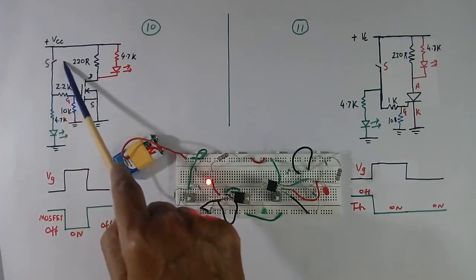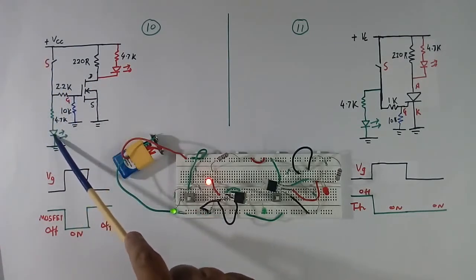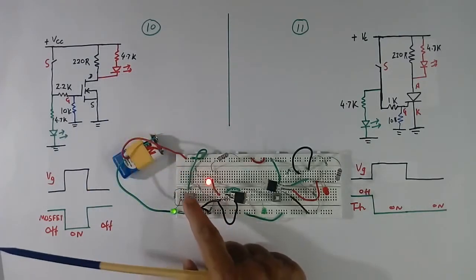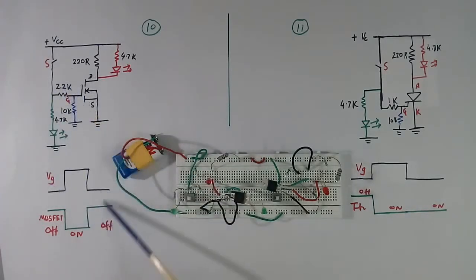Now I will open the switch. So this gate pulse will go. This LED will become OFF. This also will become OFF. See both are OFF. So now we are here. Gate pulse has been removed, so this MOSFET has become OFF.